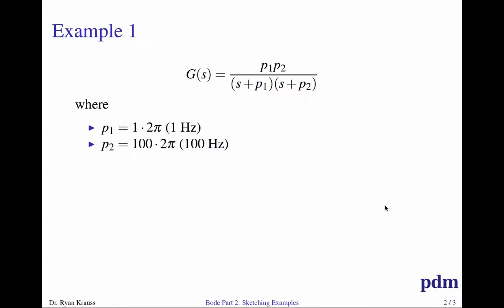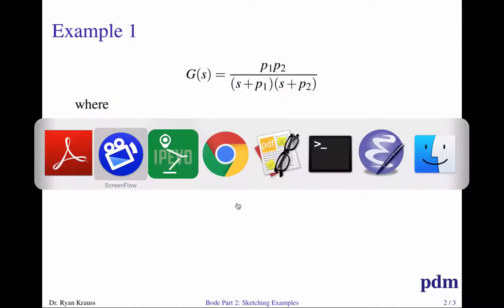For my first example I want to consider a transfer function that is basically two first-order poles multiplied together: P1 over (s plus P1) times P2 over (s plus P2). It generally goes smoothest when doing Bode plots to have the poles widely separated in the frequency domain, so I'm going to set P1 to 1 Hz and P2 to 100 Hz. When I plot them on a Bode plot I'll always have frequency in Hertz on my x-axis.